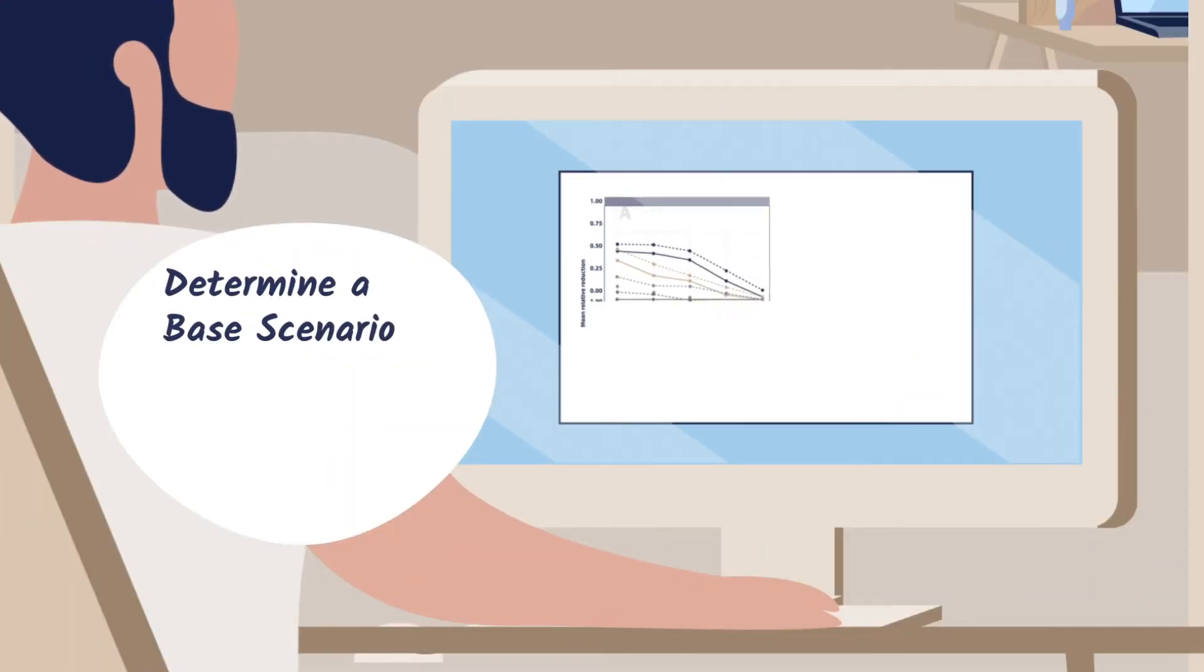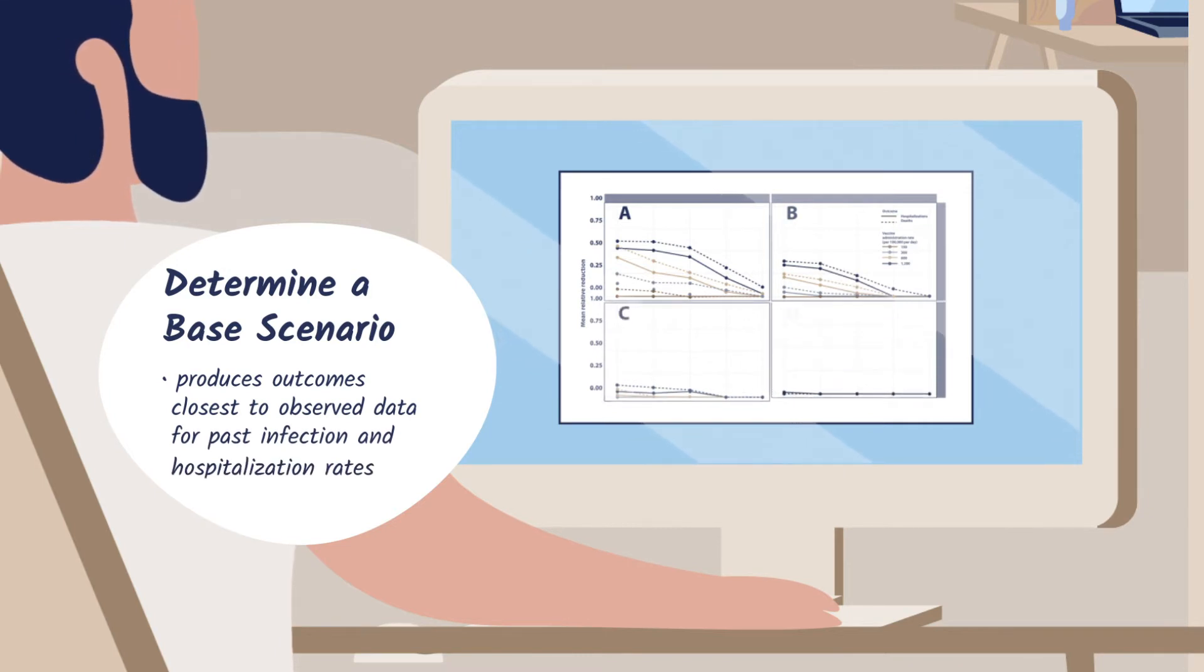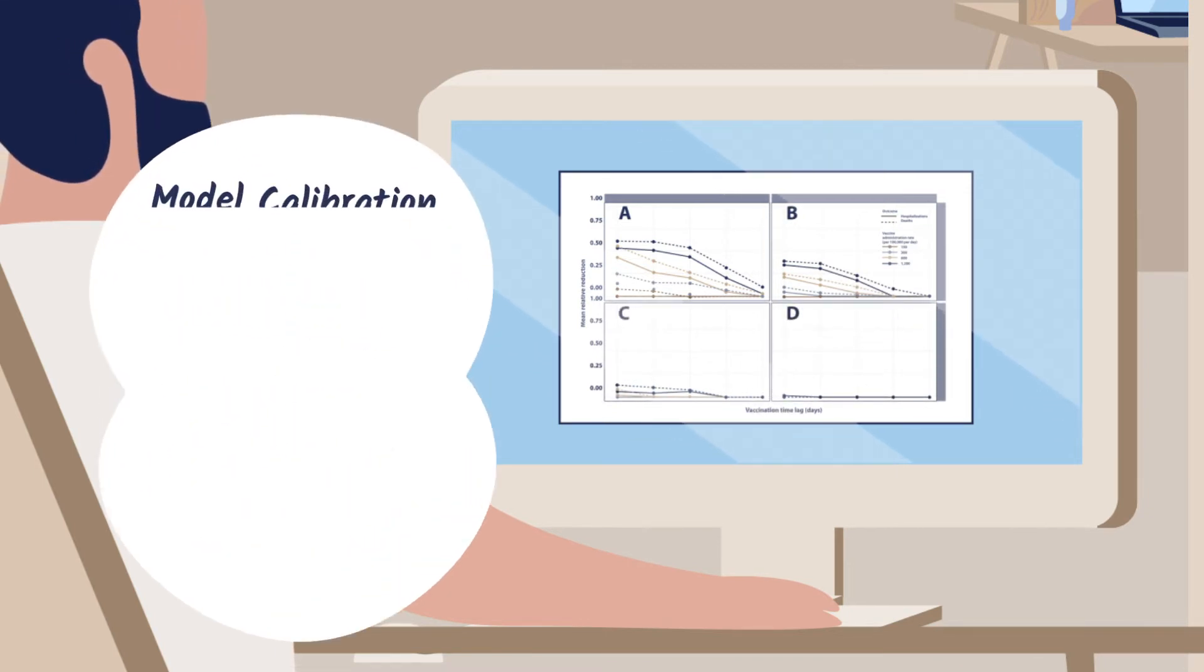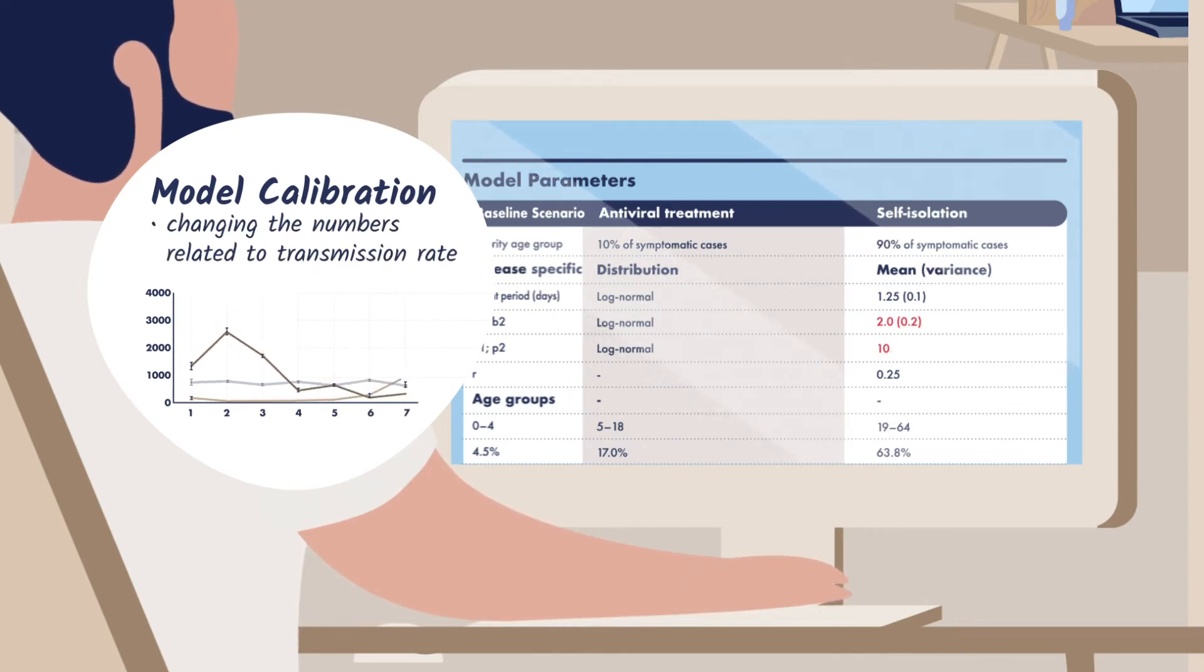We determine a base scenario that produces outcomes closest to observed data for past infection and hospitalization rates through model calibration. That is, changing the numbers related to transmission rate and other assumptions about the population.